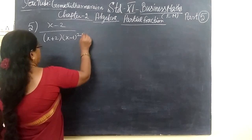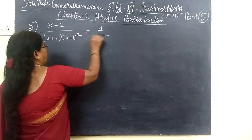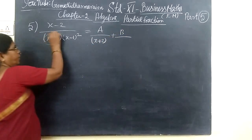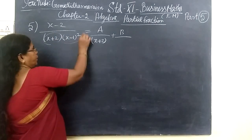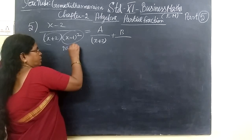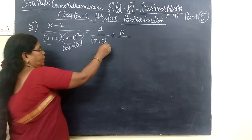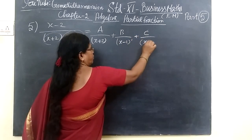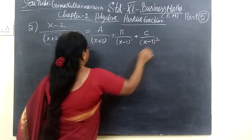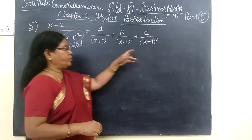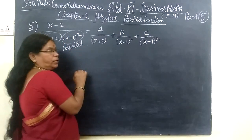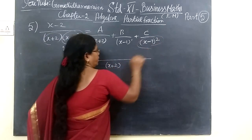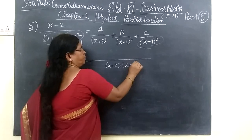We will do one more sum. This time it is written as A by S plus 2, then plus B by another factor. This time the roots are repeated. Since the roots are repeated, you write power 1 for the first, then B by power 2. So S minus 1 to power 1, and S minus 1 whole square — these are repeated roots.